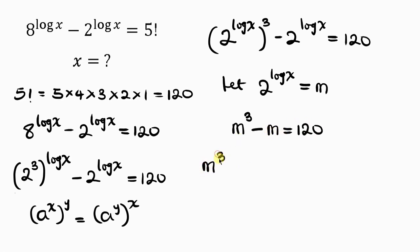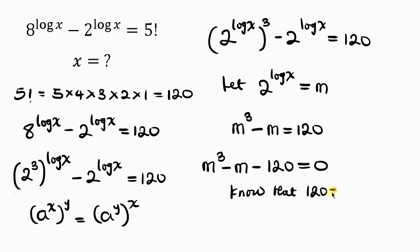Moving 120 to the left-hand side gives m cubed minus m minus 120 equal to zero. Now, 120 is the same as 125 minus 5. The reason we choose 125 minus 5 is that 125 is a perfect cube of 5 — it can be written as 5 cubed — and this is 5. So 5 cubed minus 5.